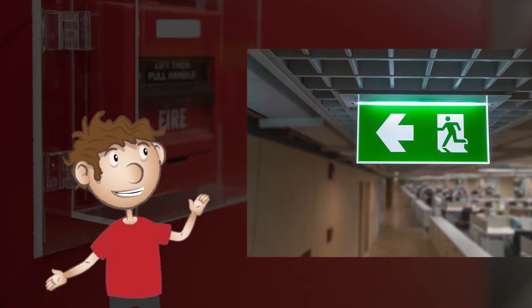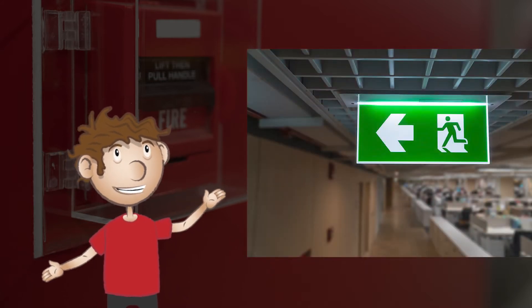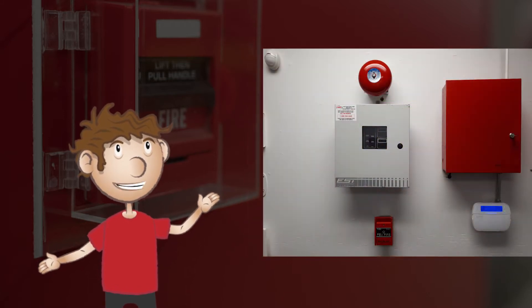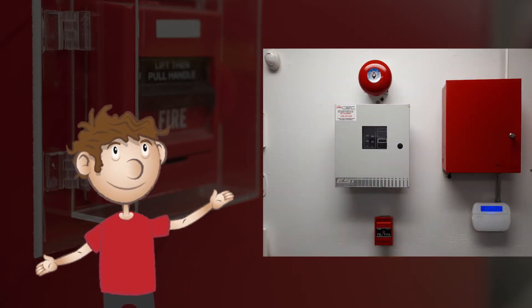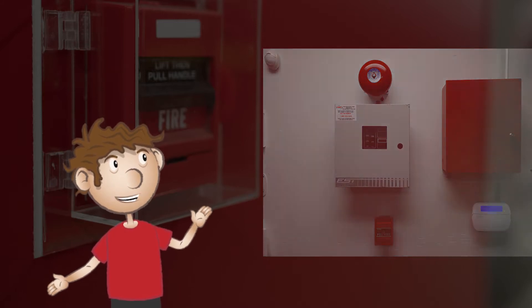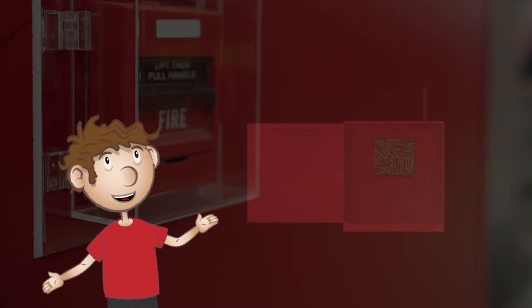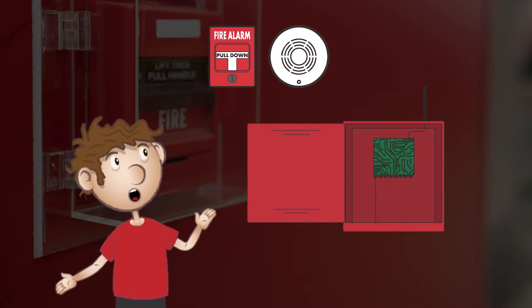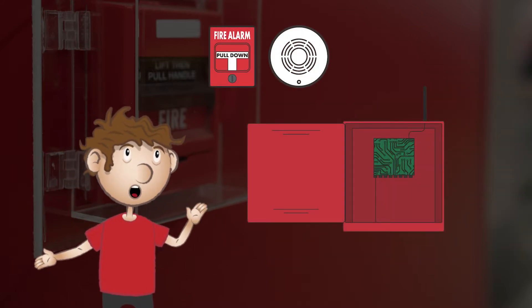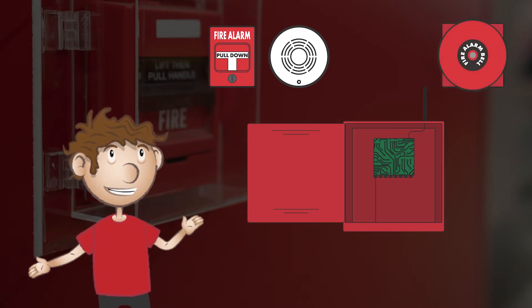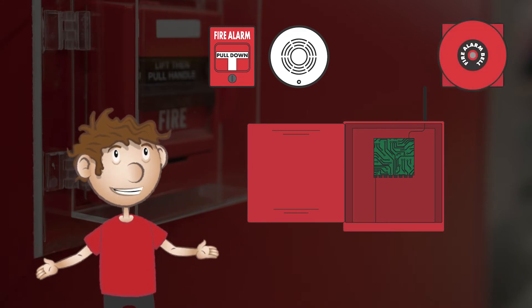A fire alarm system consists of several different inputs and output components. First is the control panel. This is the brain of the system and is the central hub that monitors inputs. The control panel also controls output actions and sends information to notification devices.